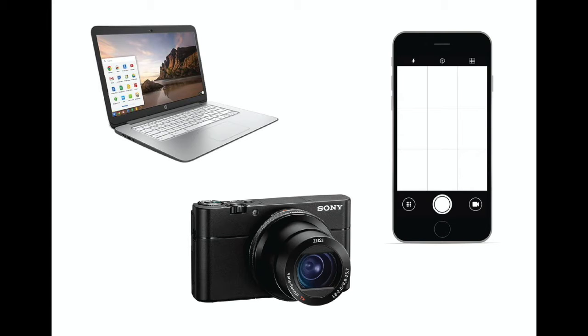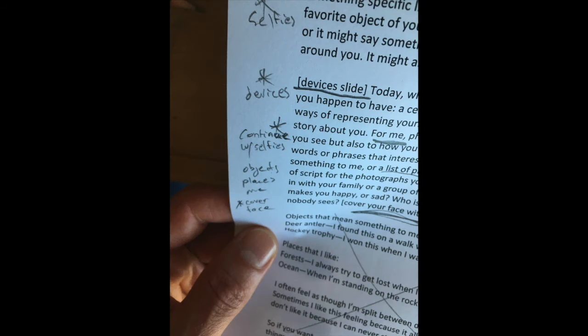For me, photographs are a little bit like written notes. They refer to something you see, but also to how you think. This picture that you see here doesn't just show you what I look like. It's the result of a whole bunch of choices I made — the framing of my head and my glasses, the light behind me, the window, and the blue sky above me.